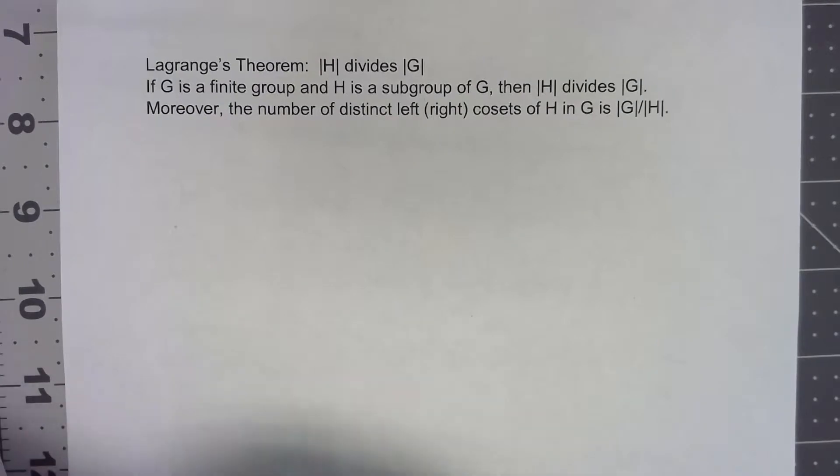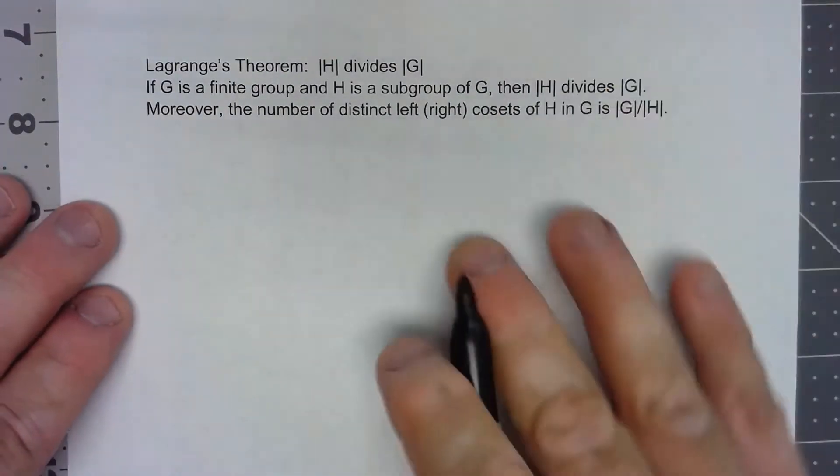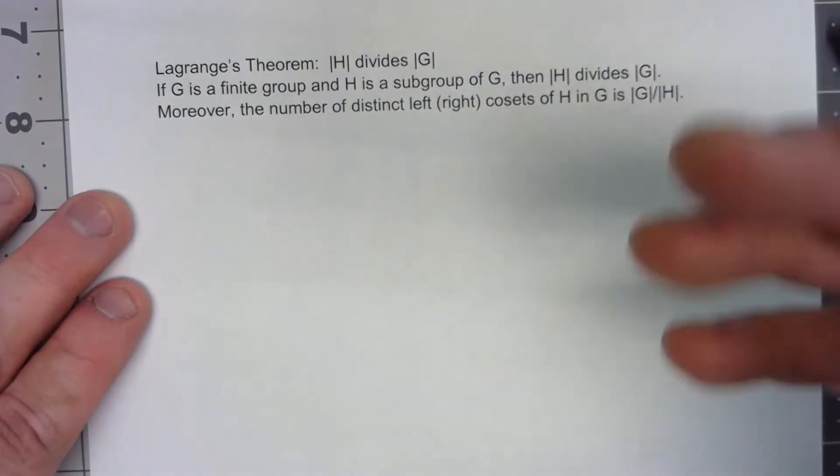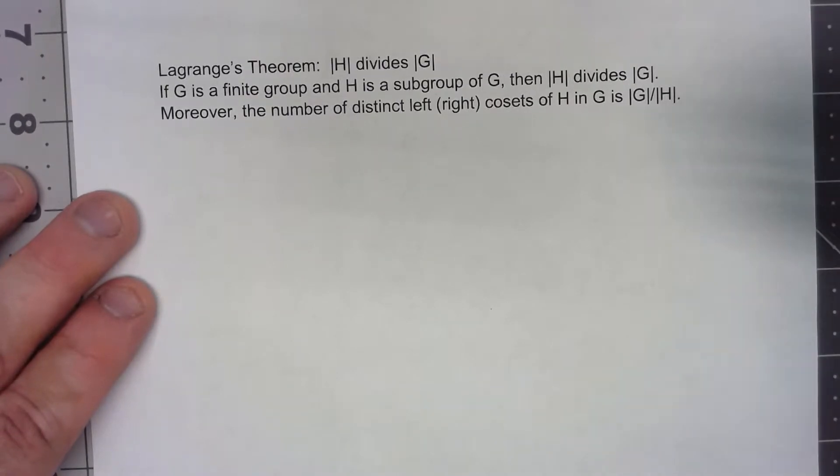So let's start. Let's say that we can list what are all the different cosets of H in G.